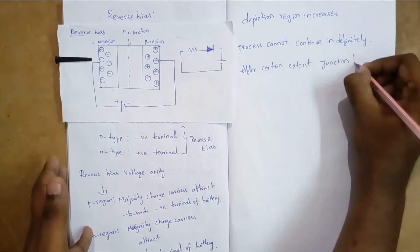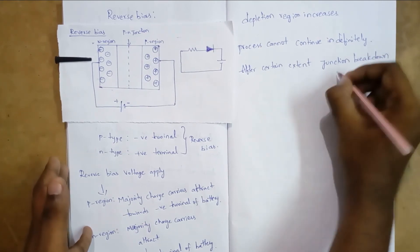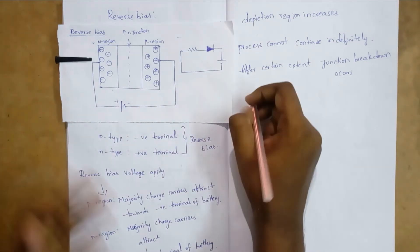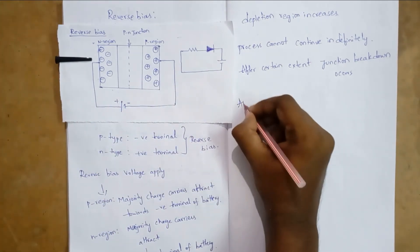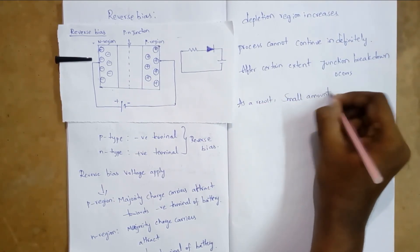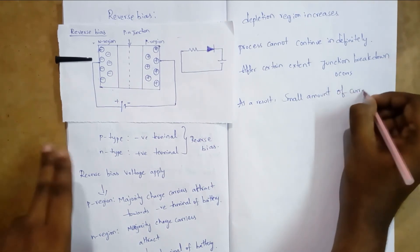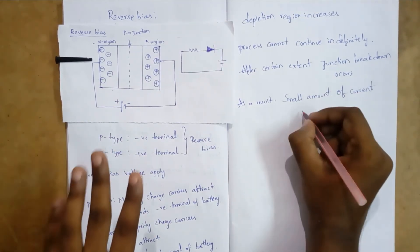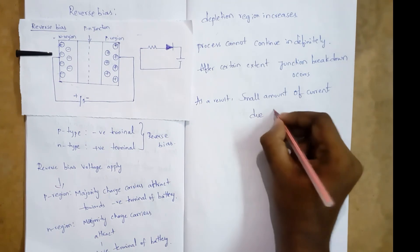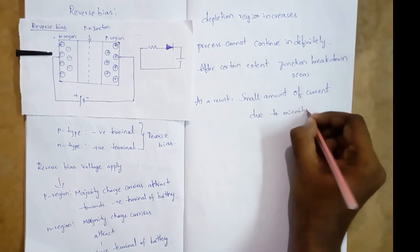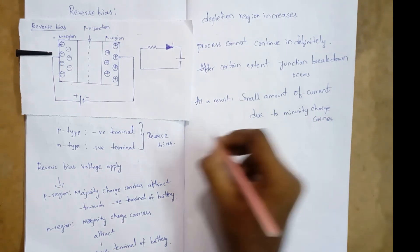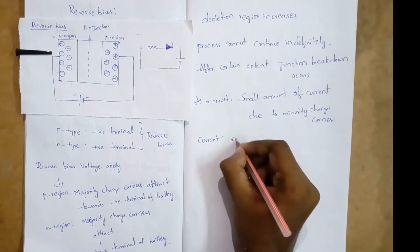Junction breakdown occurs. As a result, a small amount of current flows due to minority charge carriers. This current is called the reverse saturation current.